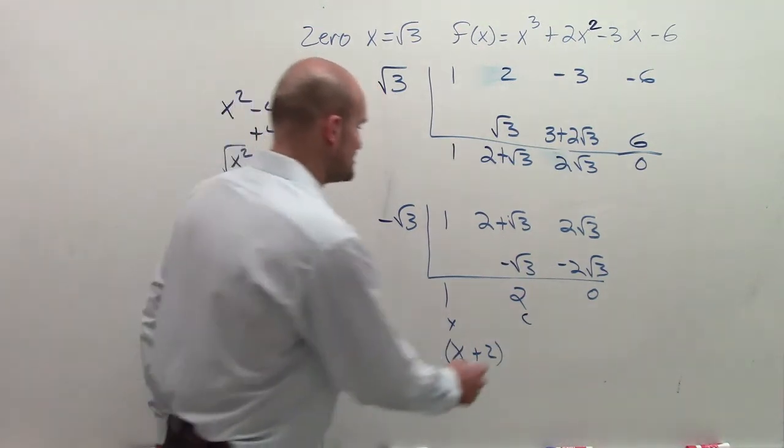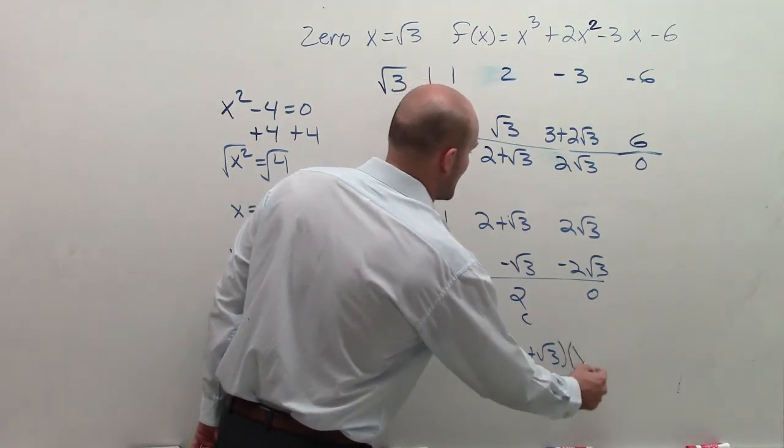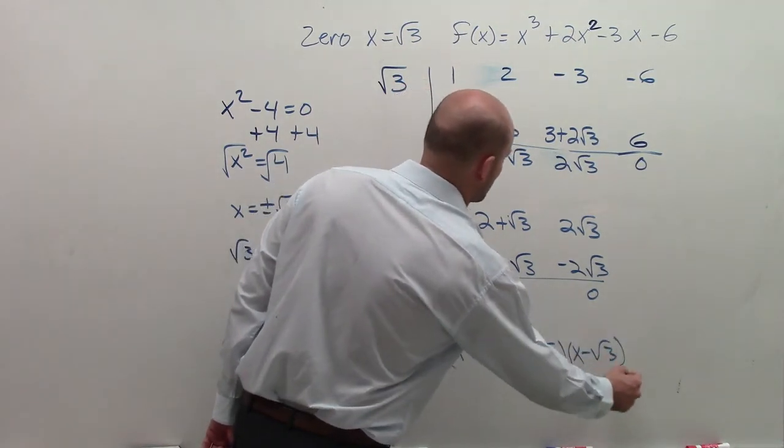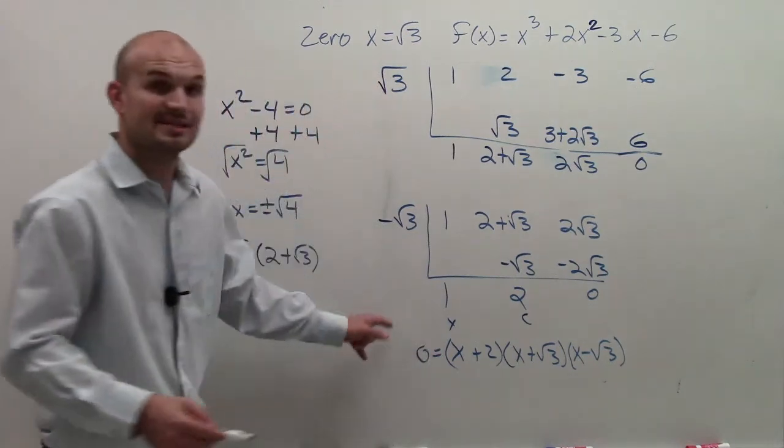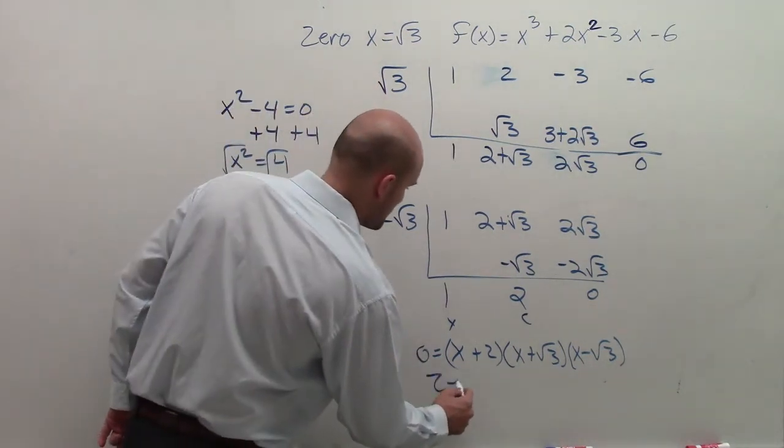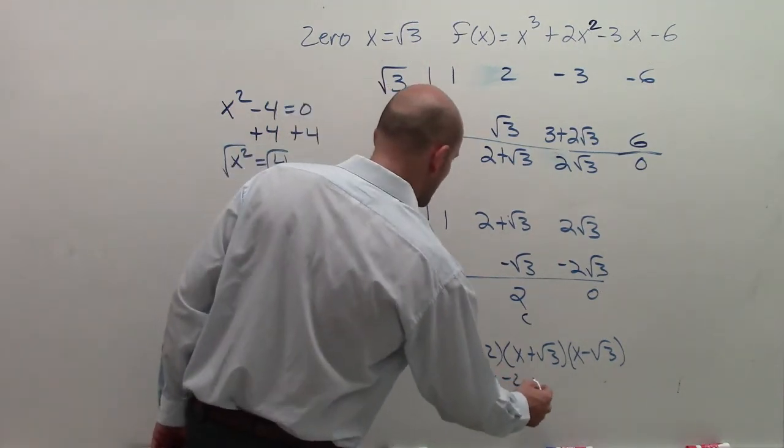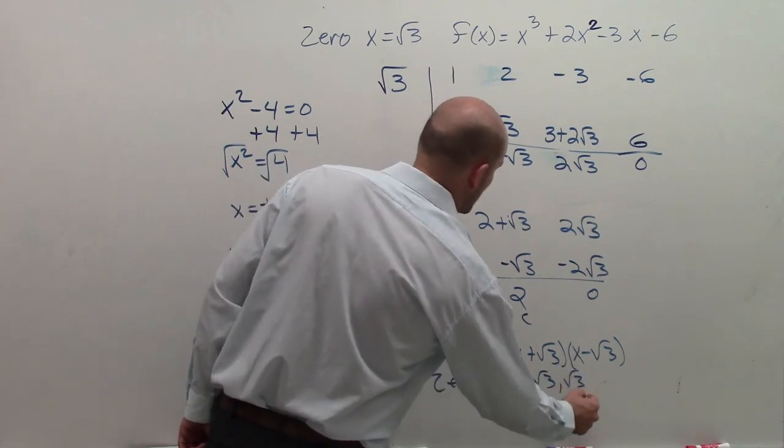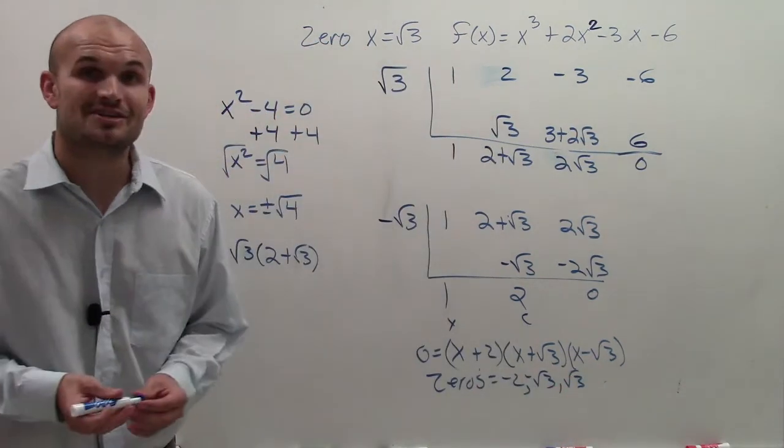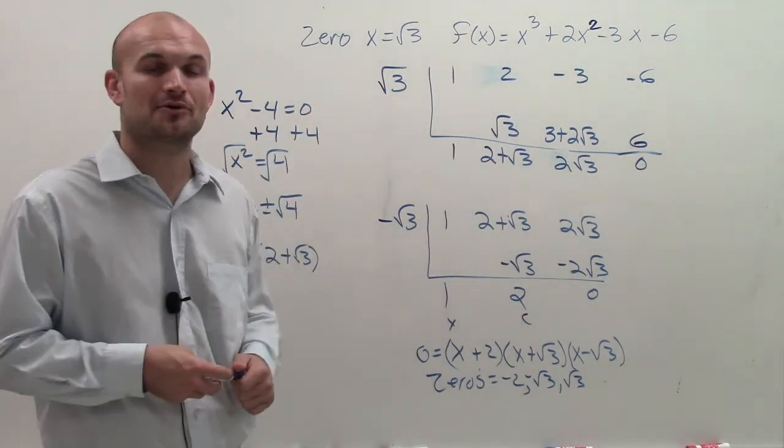So my factors are going to be x plus 2, x plus square root of 3, and x minus square root of 3. And then if you want to find the zeros, the zeros, when using the zero product property, are going to equal negative 2, negative square root of 3, and square root of 3. And there you go, ladies and gentlemen. That's how you find all the zeros when given a radical root. Thanks.